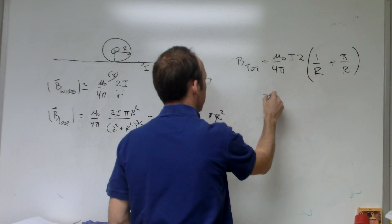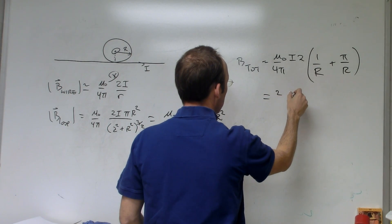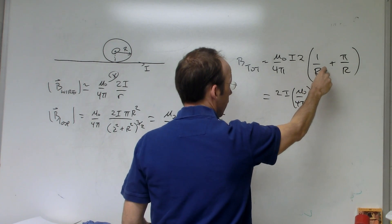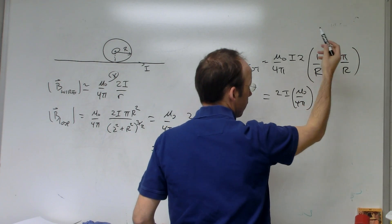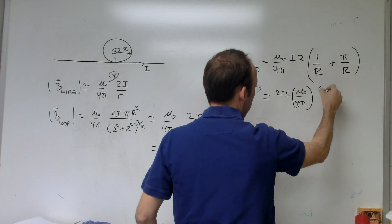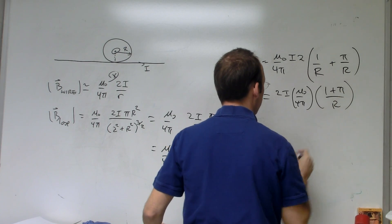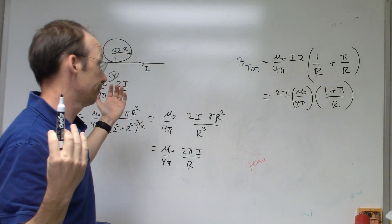Okay, so that's the answer for the magnitude. But let's just take it a little bit further. 2i mu naught over 4 pi. This is going to be, that is a common denominator, so I get 1 plus pi over r. That's it.